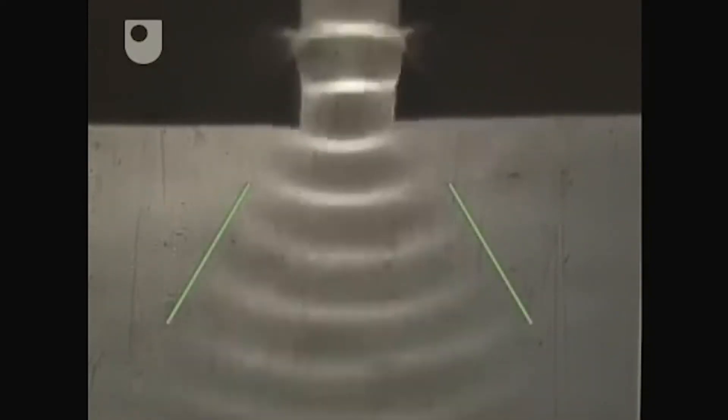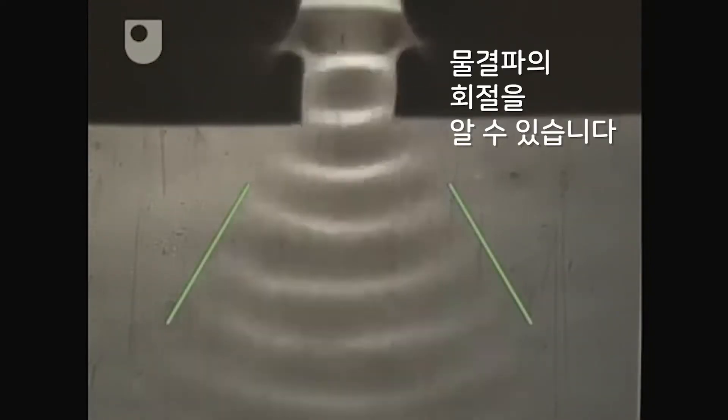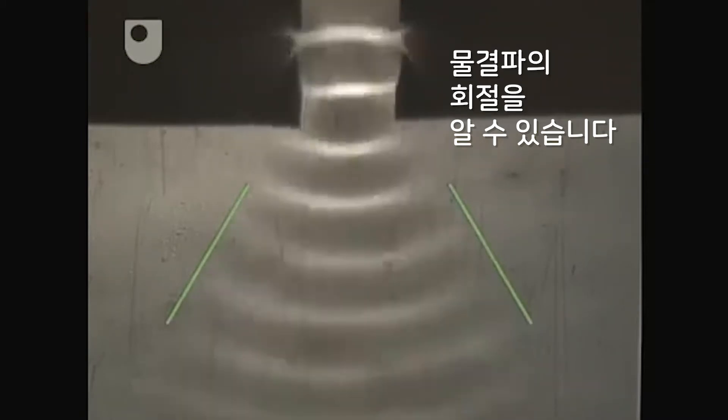...that as the waves pass through the aperture they spread out. This spreading out of a wave as it passes through an aperture is known as diffraction, and it's a property of all types of wave.